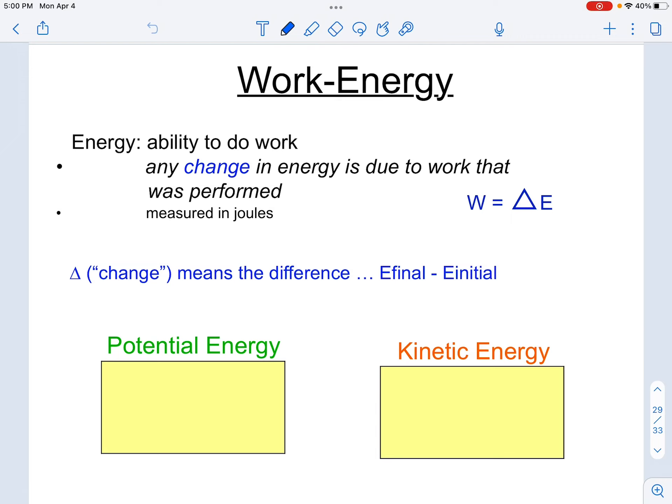So we stated in a previous lesson that both work and energy are measured in joules. And at the time we said that they were definitely related, but we needed more information to know what exactly makes them synonymous. And so here is the missing piece. Work is equal to delta E. Remember, delta means change. And the change in anything is going to be final minus initial.